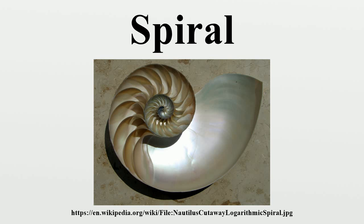In nature, the study of spirals in nature has a long history. Christopher Wren observed that many shells form a logarithmic spiral. Jan Swammerdam observed the common mathematical characteristics of a wide range of shells from helix to spirula, and Henry Nottage-Moseley described the mathematics of univalve shells. Darcy Wentworth-Thompson's On Growth and Form gives extensive treatment to these spirals, describing how shells are formed by rotating a closed curve around a fixed axis, with the shape remaining fixed but its size growing in geometric progression.